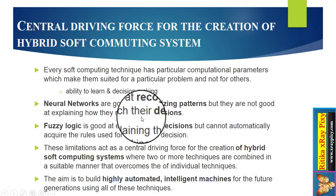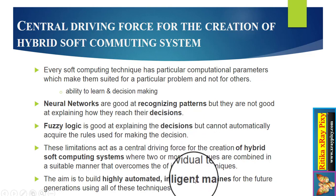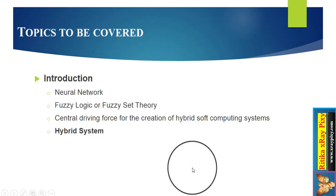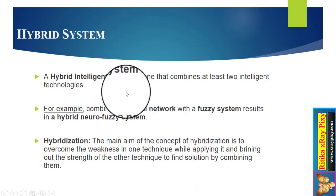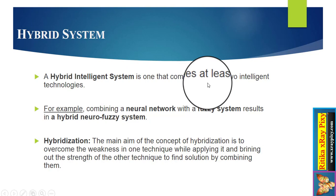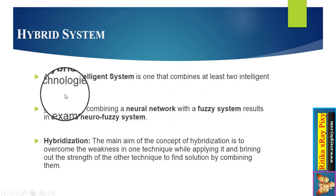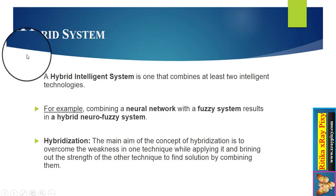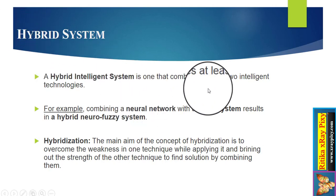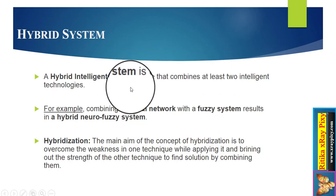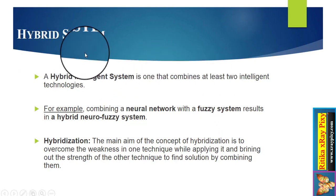Next, what is a hybrid system? It is an intelligent system that combines at least two intelligent technologies. In order to create a hybrid system, you need to combine at least two intelligent technologies together. In the case of a neuro-fuzzy hybrid system, we combine neural networks with fuzzy logic, which results in a neuro-fuzzy hybrid system.